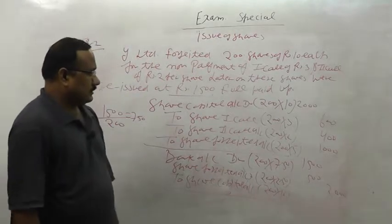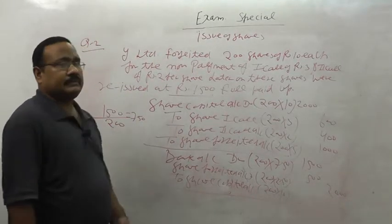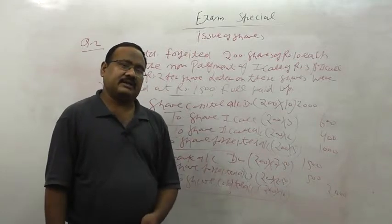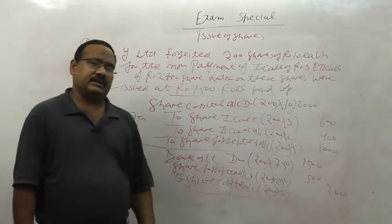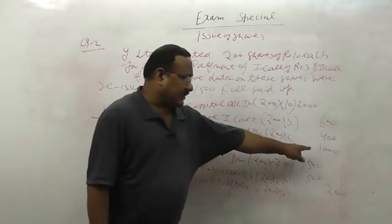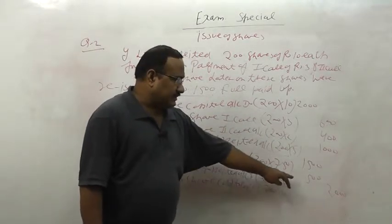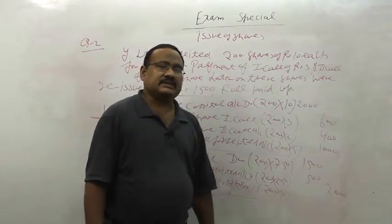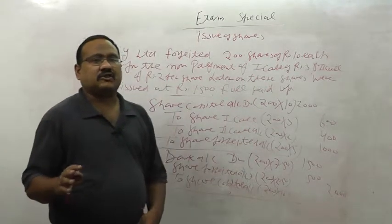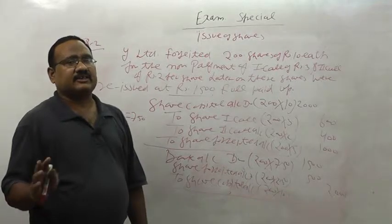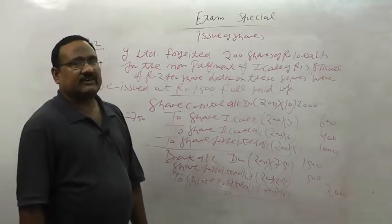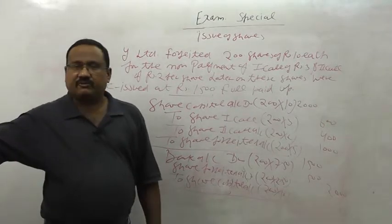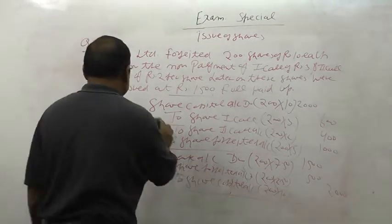Shares worth 2000 sold for 1500, direct discount of 500 taken from forfeited account. We forfeited 1000, used 500 from forfeited, still 500 remaining which we will transfer to capital reserve. Entry will be share forfeited account debit to capital reserve account.